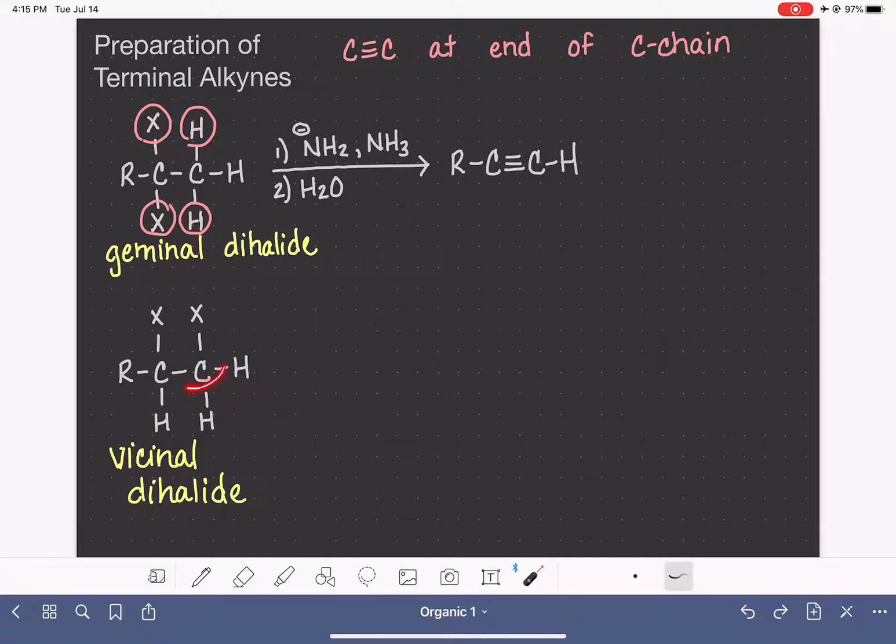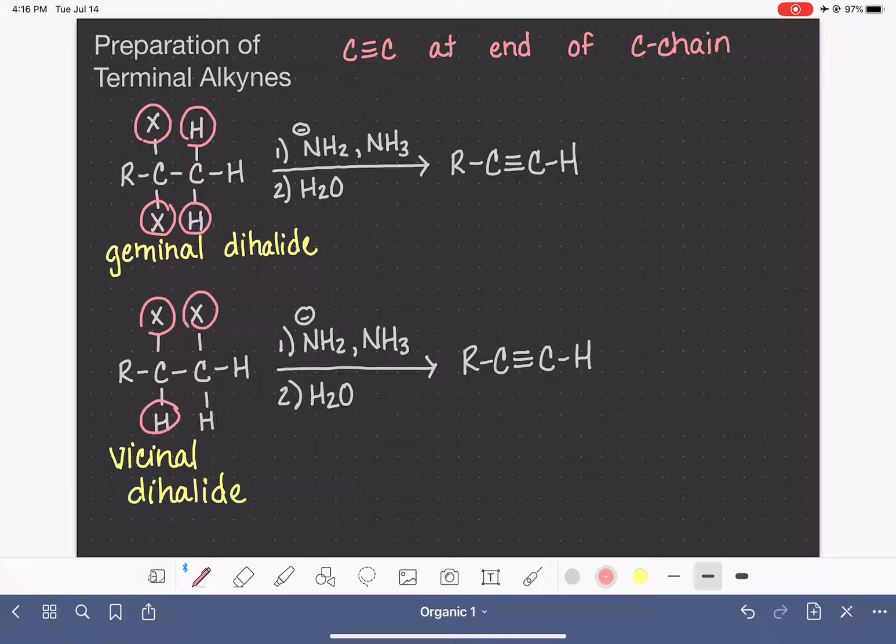If we're using a vicinal dihalide, everything is exactly the same. So we use the same reagents, amide in ammonia, followed by water, and we get the exact same product. Again, we're eliminating two halogens and two hydrogens, retaining the R group. This becomes our carbon-carbon triple bond.